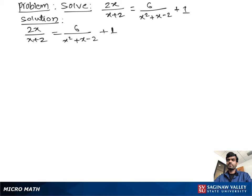Our next step: we can write 2x over x plus 2 is equal to 6 over — we take out the factor of the denominator — which is x plus 2 times x minus 1, plus 1.